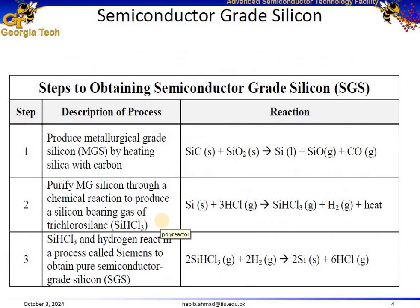This table outlines the key concepts in obtaining semiconductor-grade silicon through a multi-stage chemical process. In step 1, silicon dioxide is heated with carbon or silicon carbide to produce metallurgical-grade silicon, which is 98% pure. This reaction takes place at a high temperature of 1,800°C, reducing silicon dioxide into impure liquid silicon while releasing silicon monoxide and carbon monoxide gases.